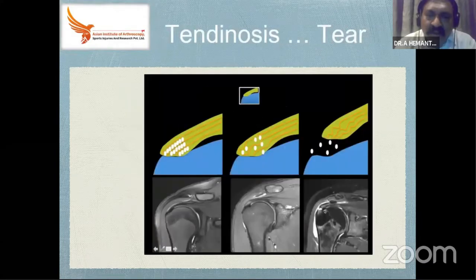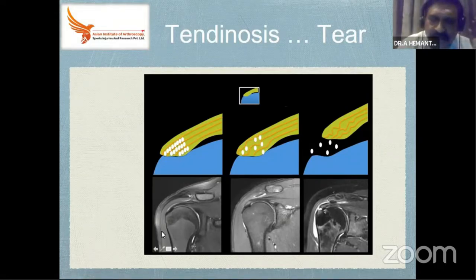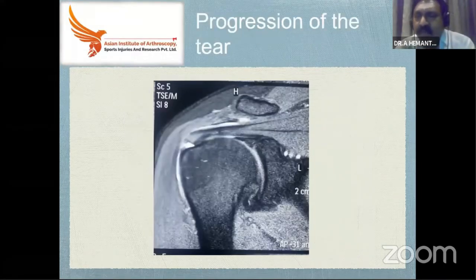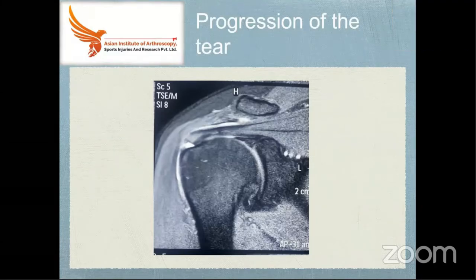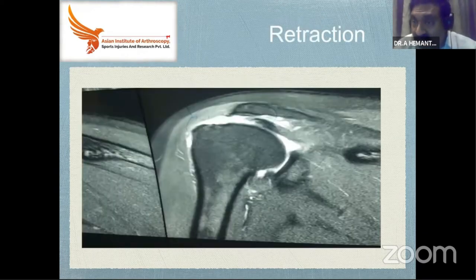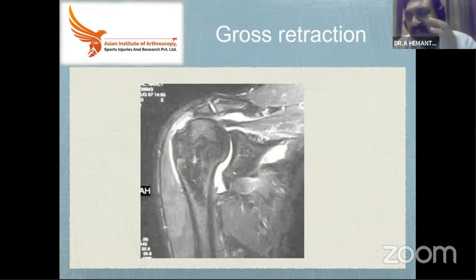Tendinosis is quite commonly reported. Tendinosis means it is not a tear — it is a disruption in the internal fiber with collection of fluid. You will see thickening and fluid collection. A complete tear looks distinctly different. Regarding tear progression: the tear starts small, then progresses, then retracts, and eventually shows gross retraction. It is important to recognize that the tear will not stay stable — over six months, one year, two years there is progression. The repairability and results also depend on this.